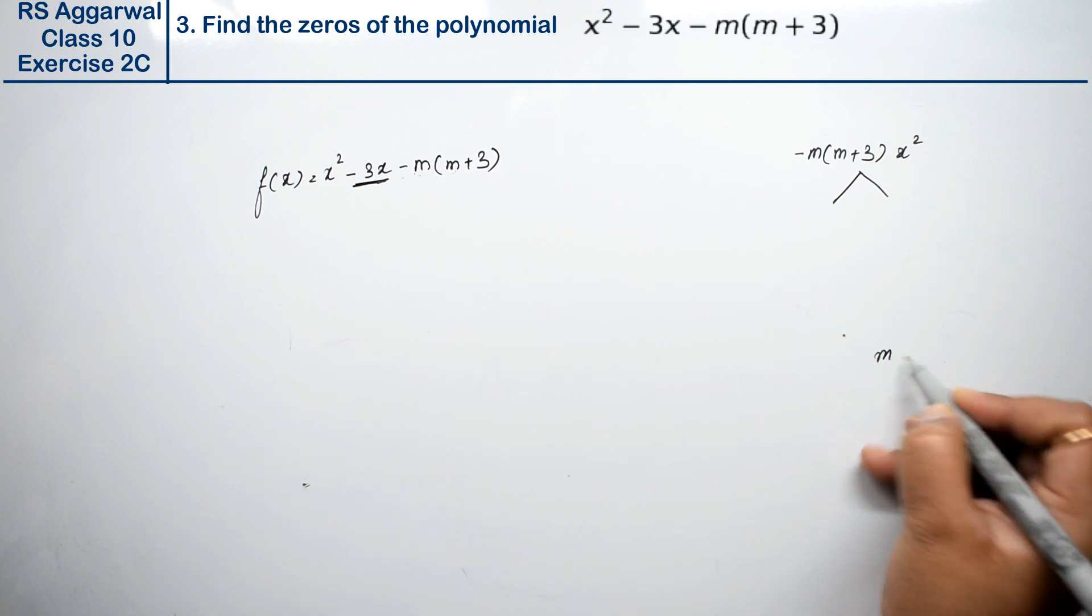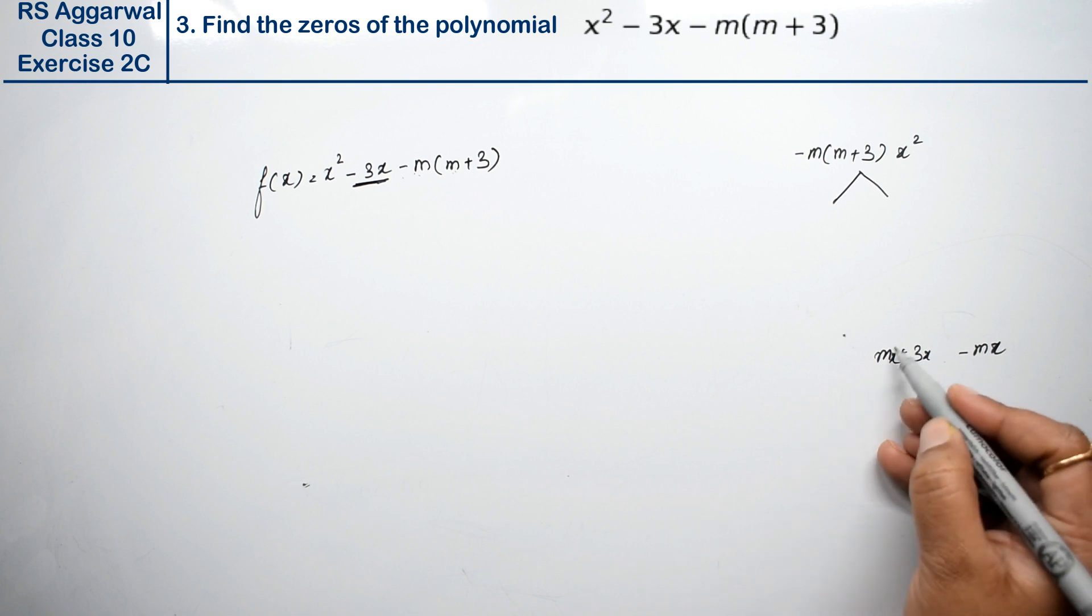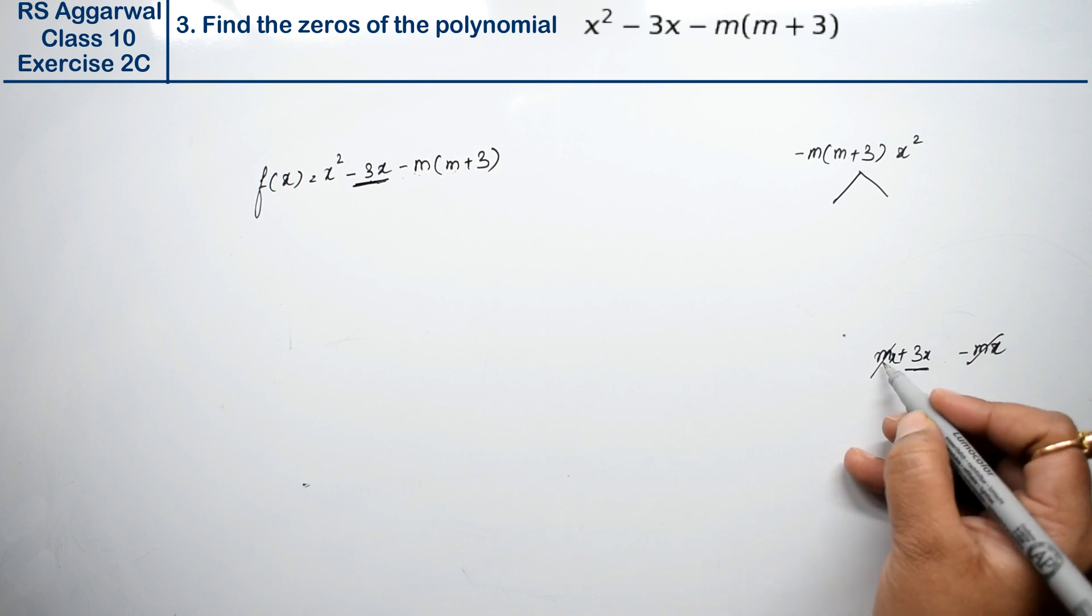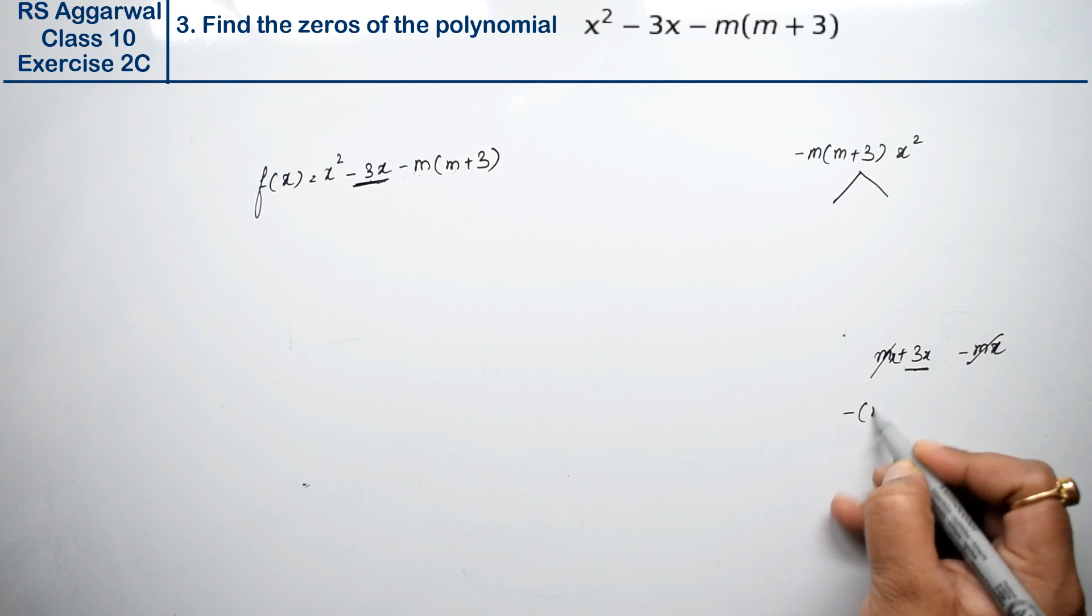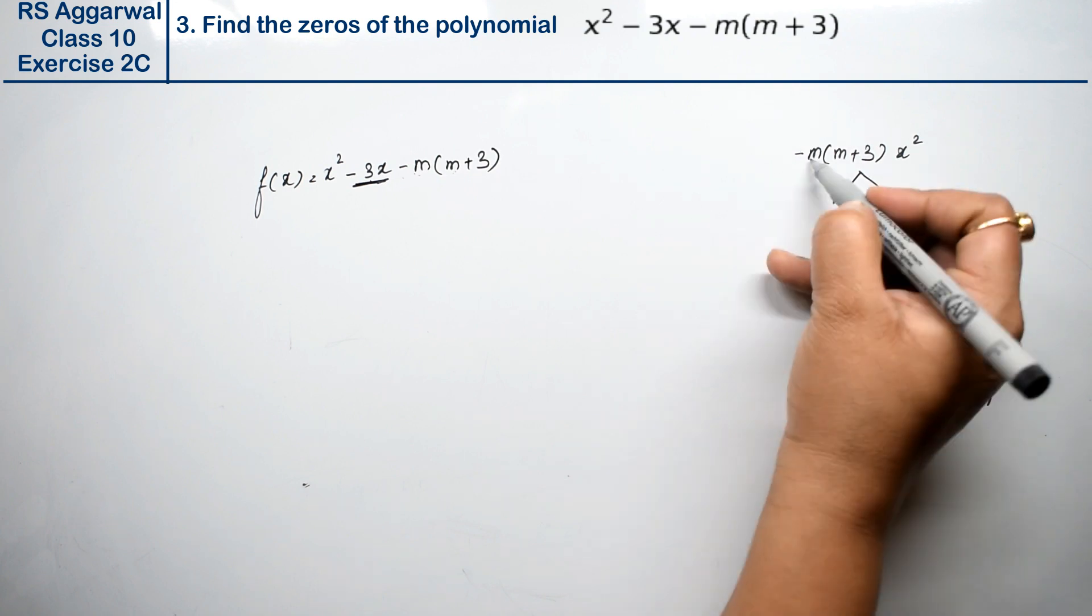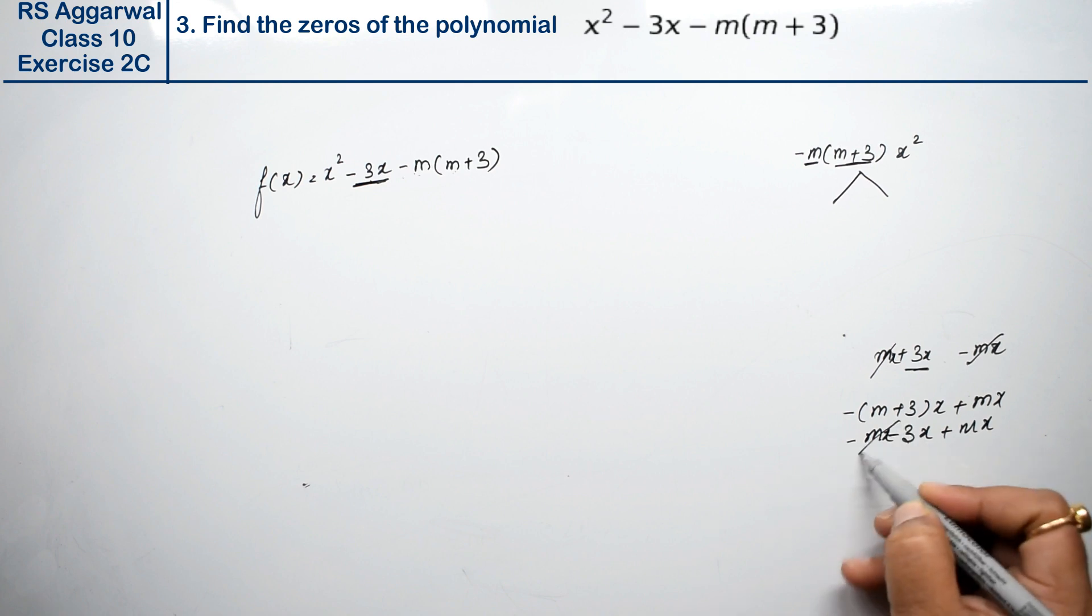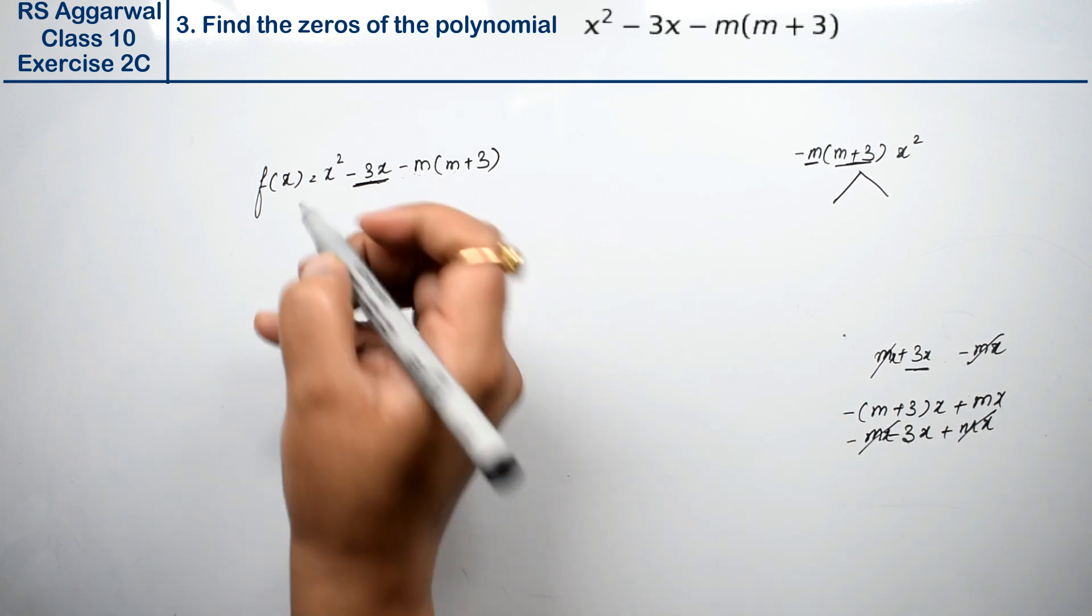If we have (m + 3)x minus mx, and we add them, these two cancel out and we get plus 3x. But we need minus. So what will we do? We take minus (m + 3)x and plus mx. These became two factors. Right? Now we opened this. These two with x came, plus mx. This cancelled. Now minus 3x, this is what we needed.